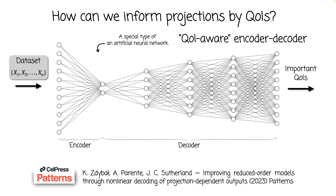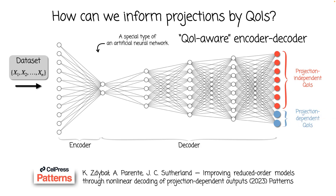You can check the paper where we propose this approach and demonstrate its interesting applications in reduced-order modeling. You will find a link to the PDF in the video description. One more very important novelty of this approach is that we allow for both projection-independent and projection-dependent QoIs. Projection-independent QoIs are ones that remain fixed throughout training. But projection-dependent QoIs are variables that get continually reprojected onto the current subspace as the neural network is training, and therefore their definition changes throughout training. The projection operator that defines the subspace can be directly extracted from the encoding layer — simply the weights W1, which define the new basis to represent the original dataset and the projection-dependent QoIs.